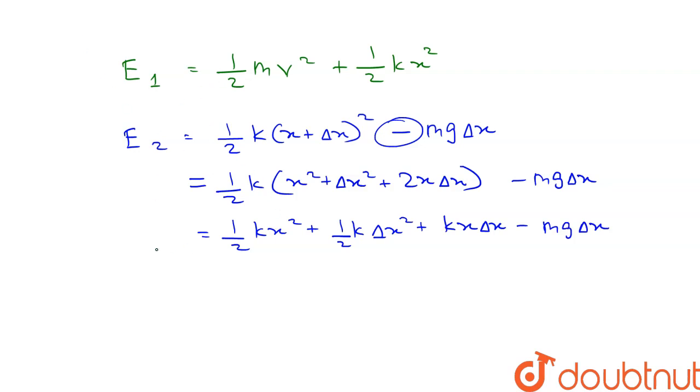So putting the value of E1 here, therefore half mv squared plus half kx squared. So half kx squared can be cancelled.